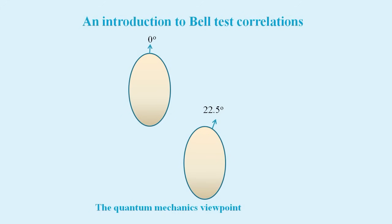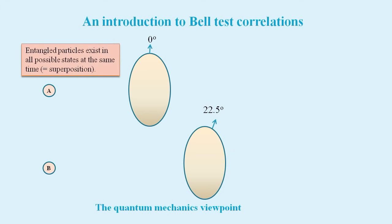Now, what if we were to separate the two filters and send one of an entangled pair of photons through each of them? What quantum mechanics says about this is that entangled photons do not have a single polarization state. They exist in all possible states at the same time. This is called superposition.